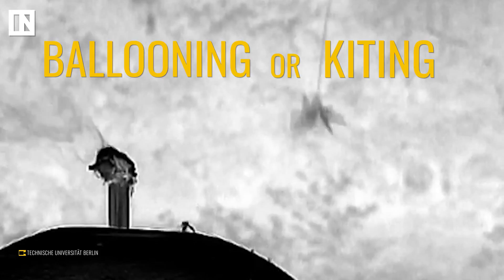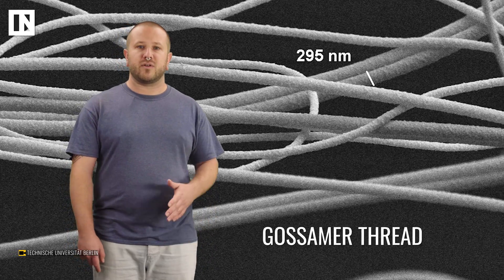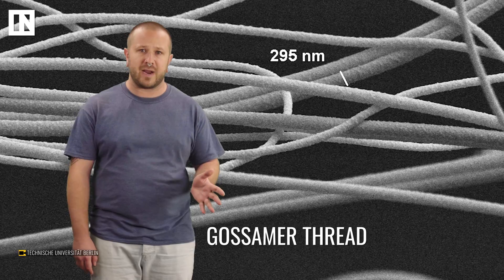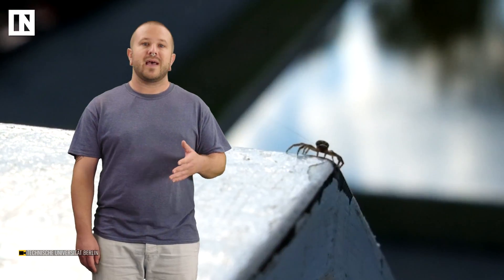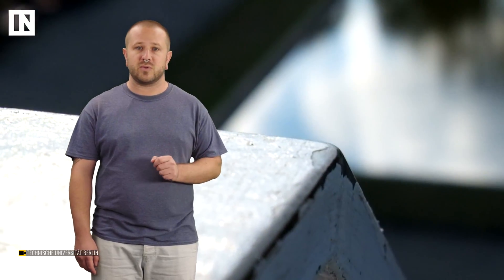Gossamer threads are fine, filmy substances spun by small spiders. This is primarily used by spiderlings to disperse. However, larger individuals have been observed doing so as well.